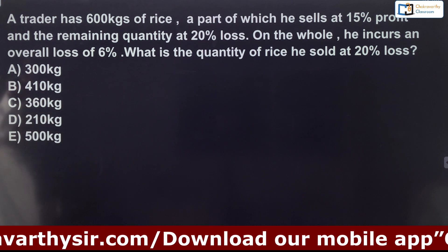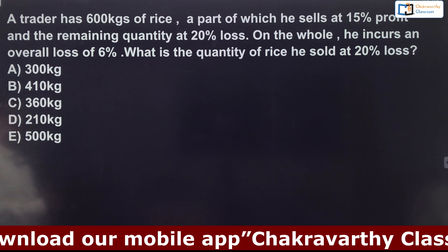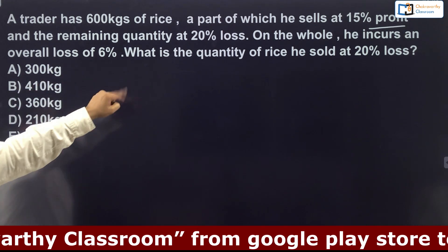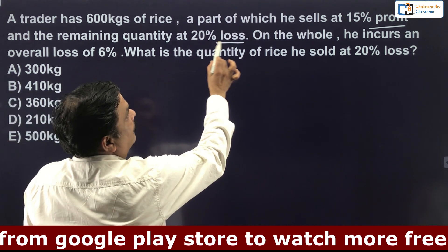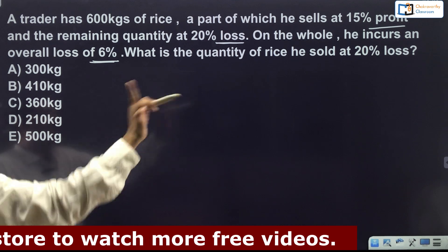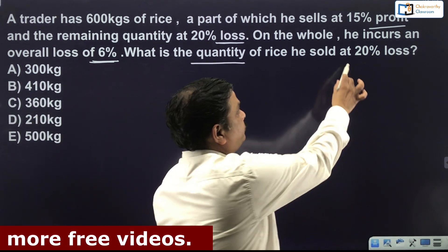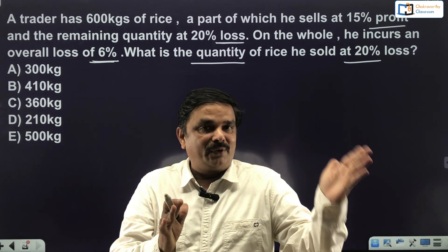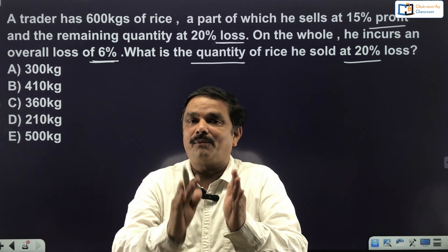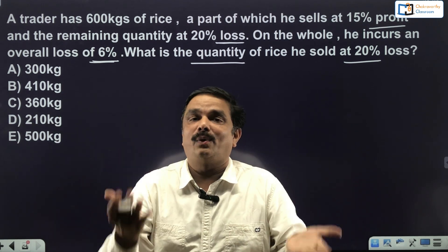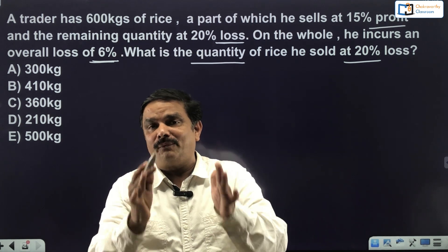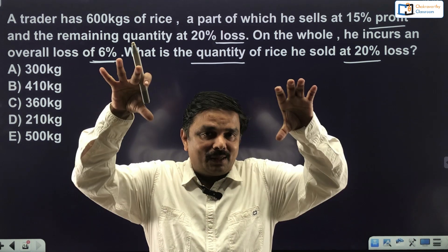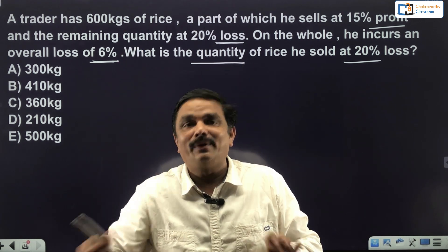The question: a trader has 600 kg of rice, part of which he sells at 15% profit and the remaining at 20% loss. On the whole he incurs an overall loss of 6%. Find the quantity of rice sold at 20% loss. If you know the ratio of quantities sold at 15% profit and 20% loss, you can easily find the answer from the total 600 kg.